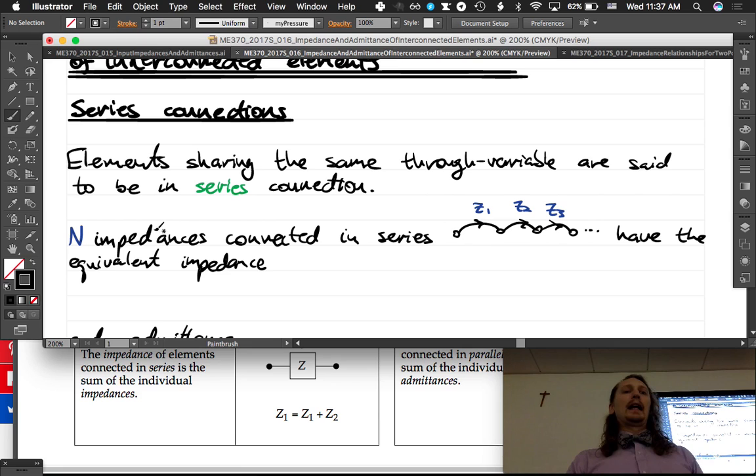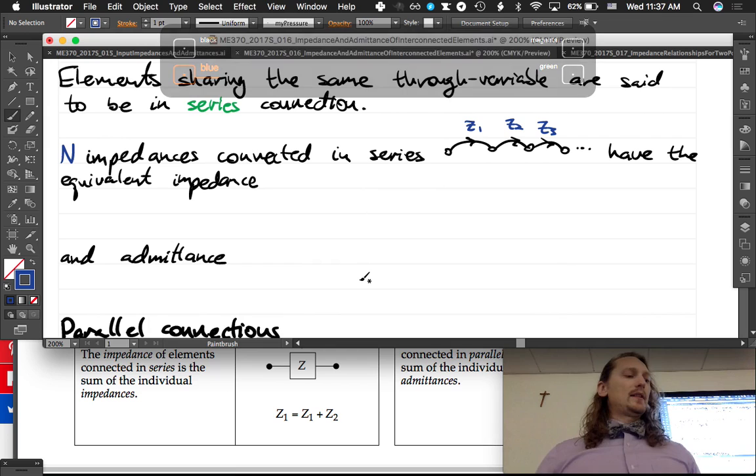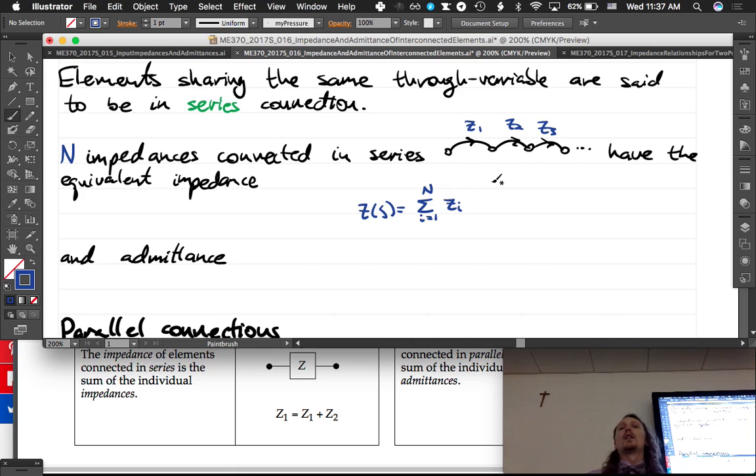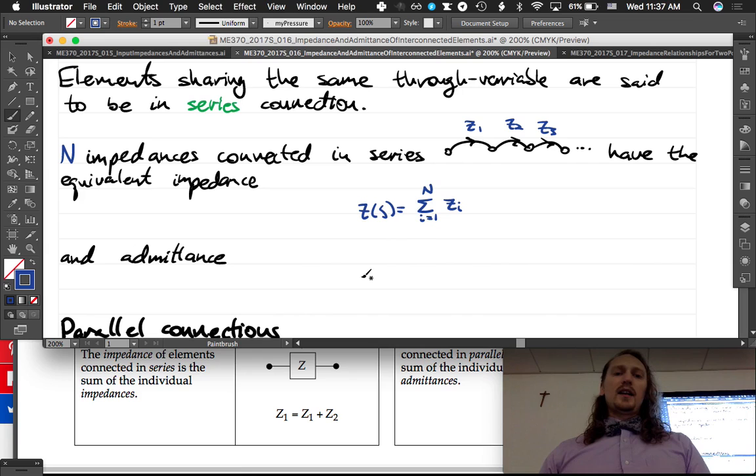And impedances connected in series have the equivalent impedance Z_s equals - and I want you guys to tell me what it is. Yeah, it's just the sum. So I'm going to use summation notation because I want to be fancy, but it's just the sum of all of the Z's - just add them up.